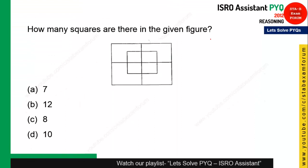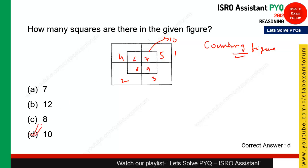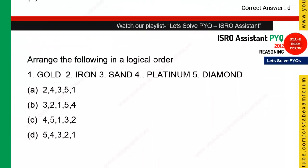This question is from non-verbal reasoning — counting figures. You need to count the number of squares. Starting from the largest box: that is 1, then 2, 3, 4, 5, 6, 7, 8, 9, and 10. So the answer is 10 and option 10 is the right answer.